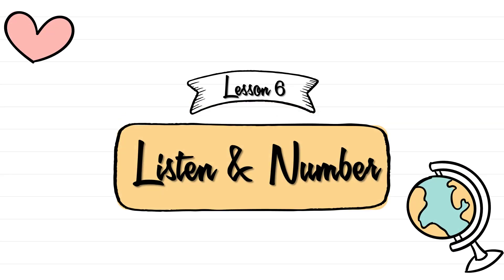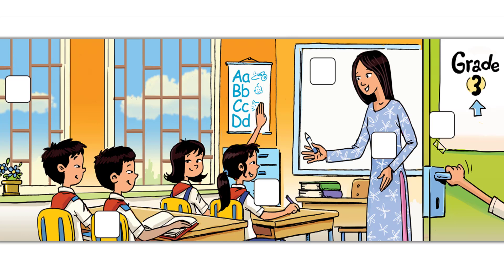Listen and number. Hello, my name is Tu. I go to Duan Titiam primary school. One: can you see me? I have long hair, it's black. Two: our teacher is Miss Lawn. She has long hair too.